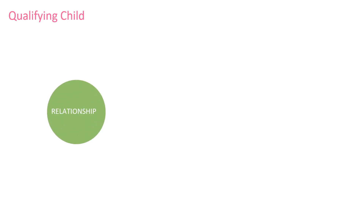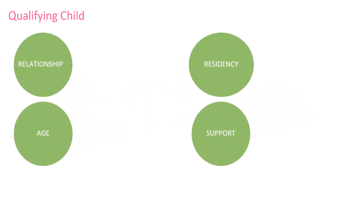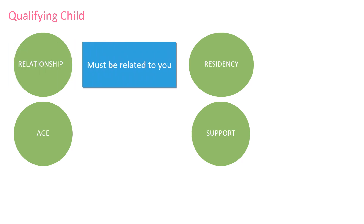There are four tests that must be met to claim a dependent as a qualifying child: relationship, residency, age, and support. For the relationship test, the child must be the taxpayer's son, daughter, stepchild, foster child, or a descendant of any of them — for example, a grandchild — or the taxpayer's sibling, including half-siblings or step-siblings, or a descendant of any of them, like a niece or nephew. For these relationship tests, an adopted child is treated the same as a natural child.